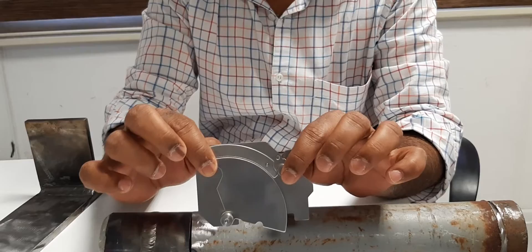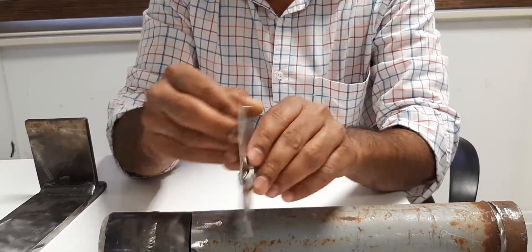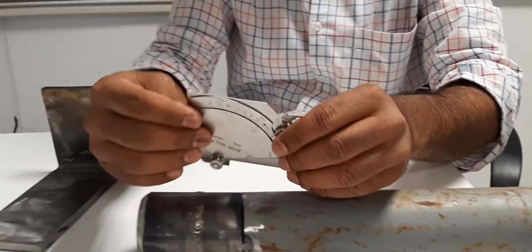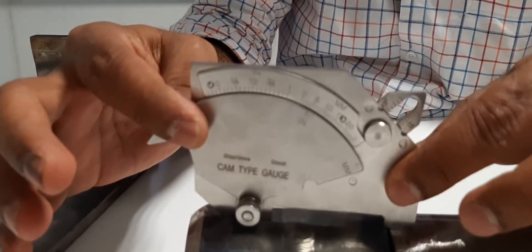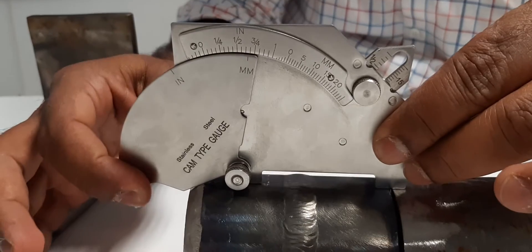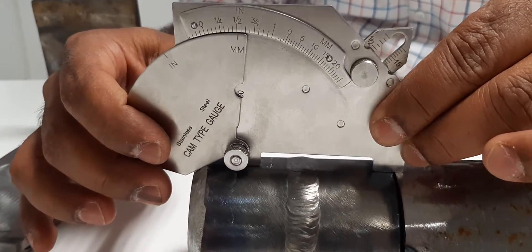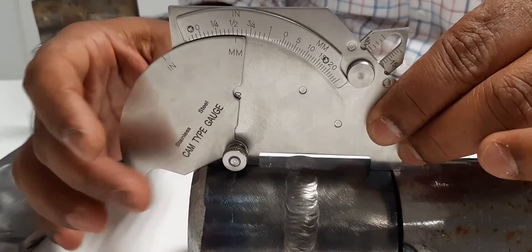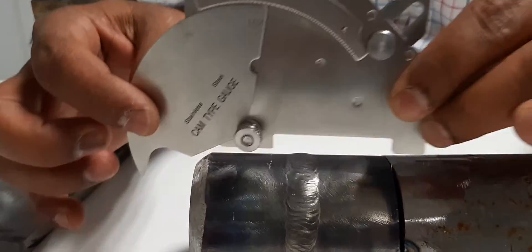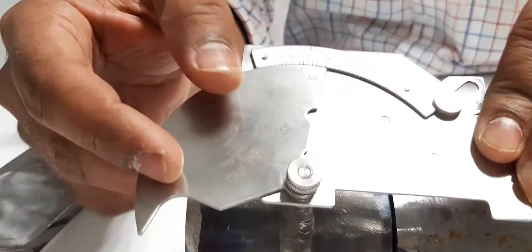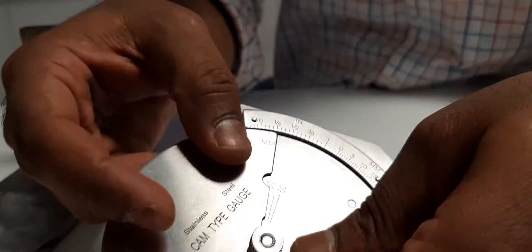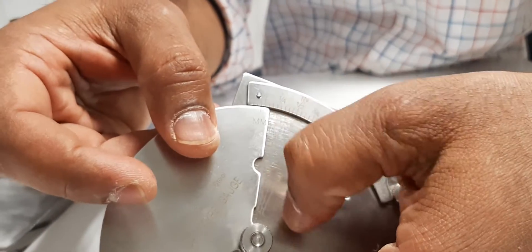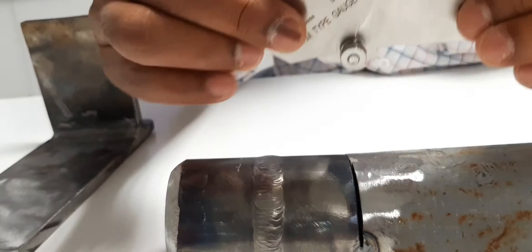Now we will go to first, the bevel angle. We have to fix the gauge like this, then we have to fix the bevel here. See, you get the angle reading here. Here is the angle reading, where the scales are matched you can get the angle.